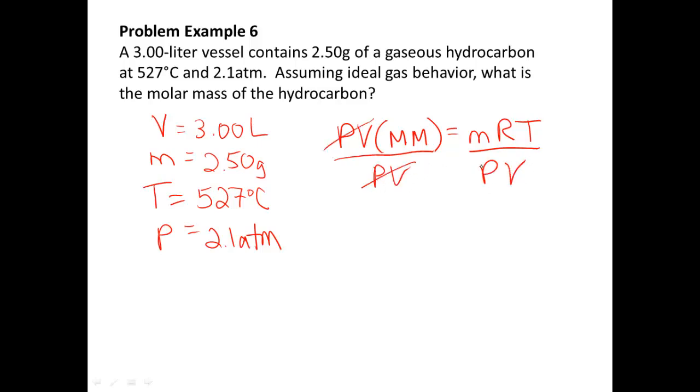And to do that, I need to divide both sides by my PV. Cross those out. So, our molar mass is equal to our mass times RT over PV. So, my mass is given in 2.50 grams. We know our R is always going to be the same thing. 0.0821 liters atmosphere over mole Kelvin.